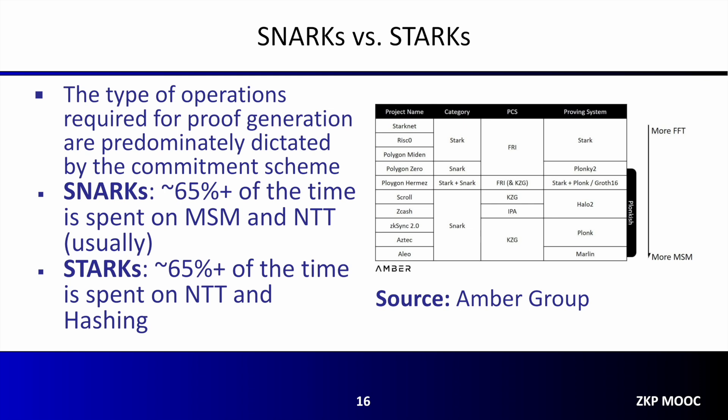In aggregate, these three previously discussed cryptographic primitives take up two-thirds or more of the time across all proof systems prior to acceleration.